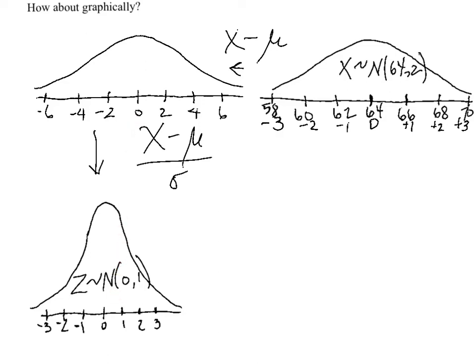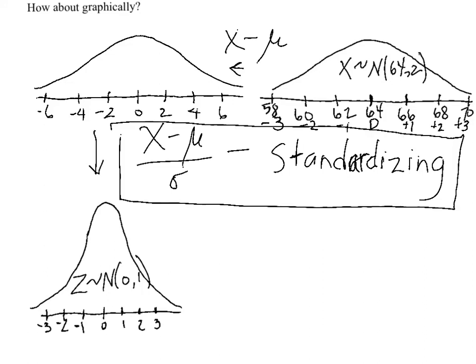This is known as standardizing. And though we can imagine visually what we're doing, transforming any normal distribution into its standard normal equivalent, denoting how many standard deviations each value is from the mean, now you have a mathematical formula to achieve that.